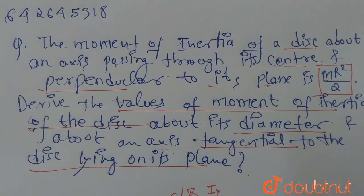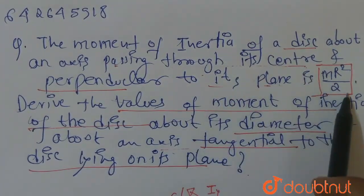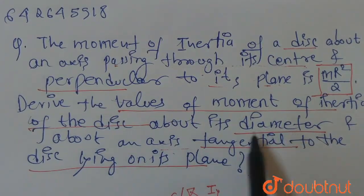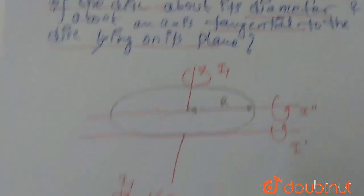Hello everyone, the moment of inertia of a disk about an axis passing through its center and perpendicular to its plane is MR² by 2. Derive the values of moment of inertia of the disk about its diameter and about an axis tangential to the disk lying on its plane. So this is our disk.